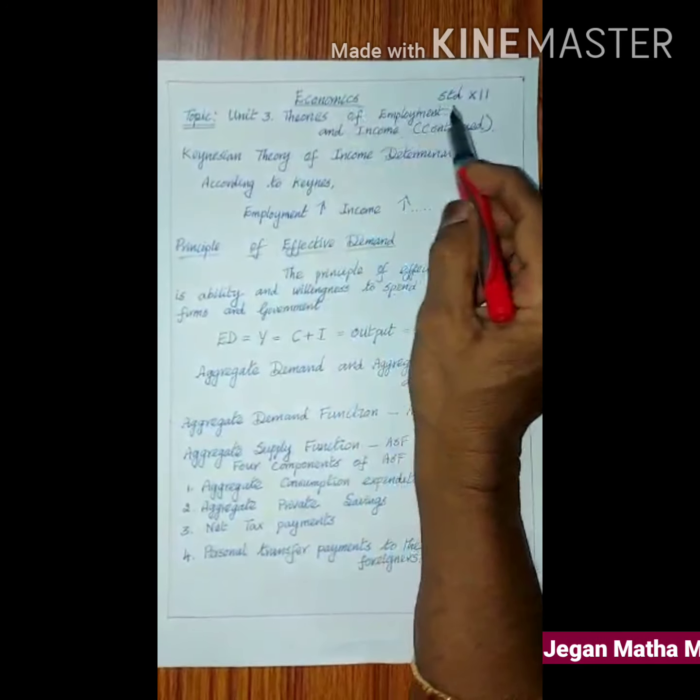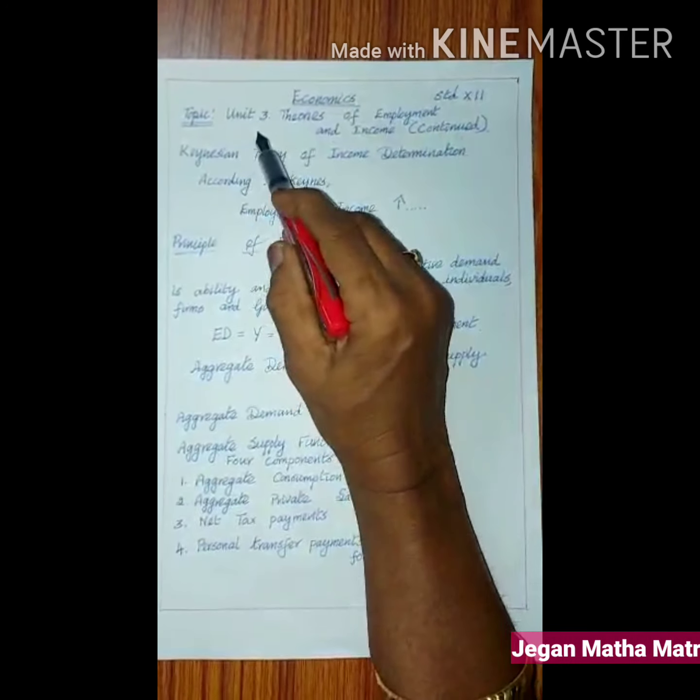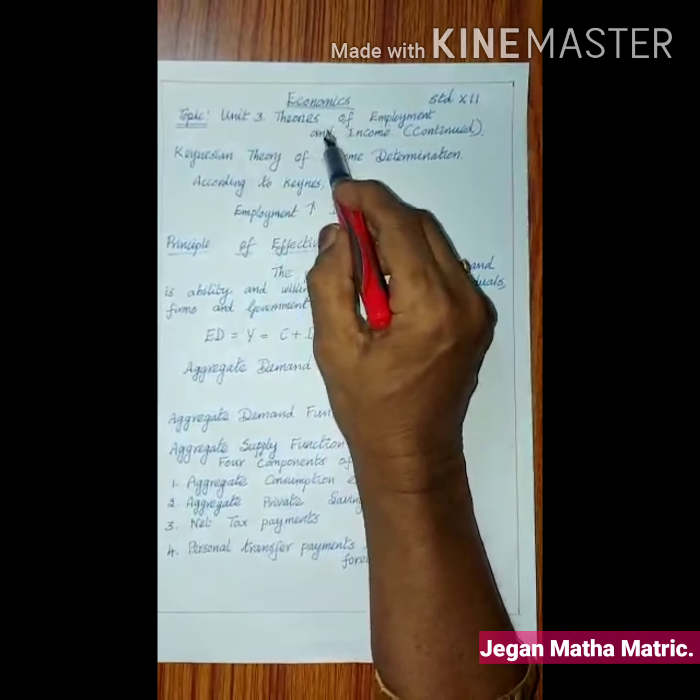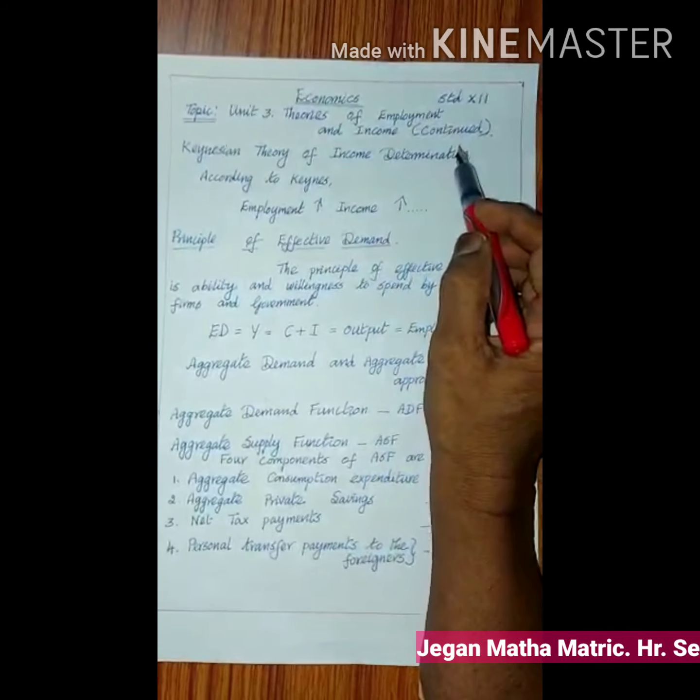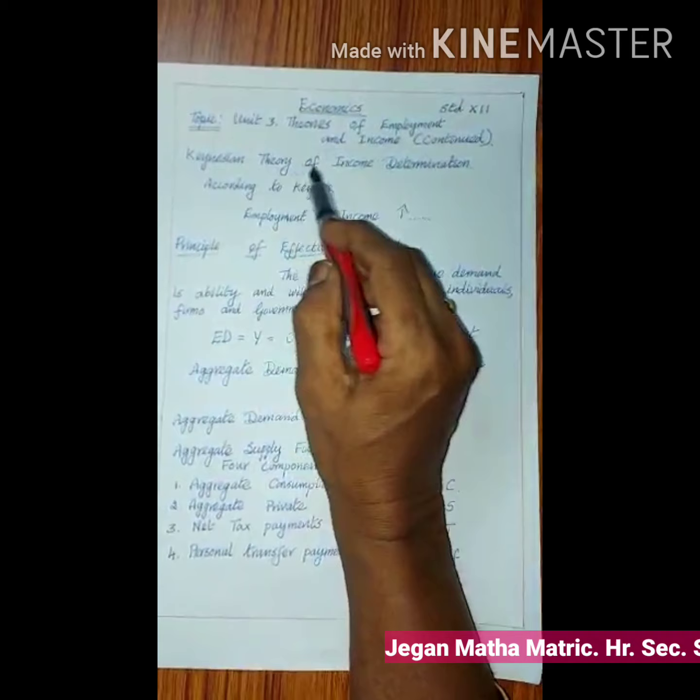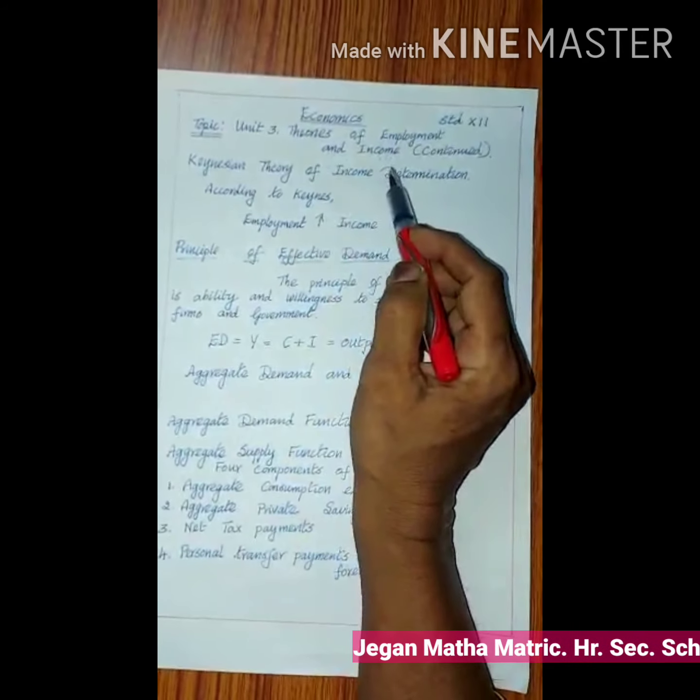Economics, Standard 12. Topic: Unit 3, Theories of Employment and Income (Continued). Keynesian Theory of Income Determination.